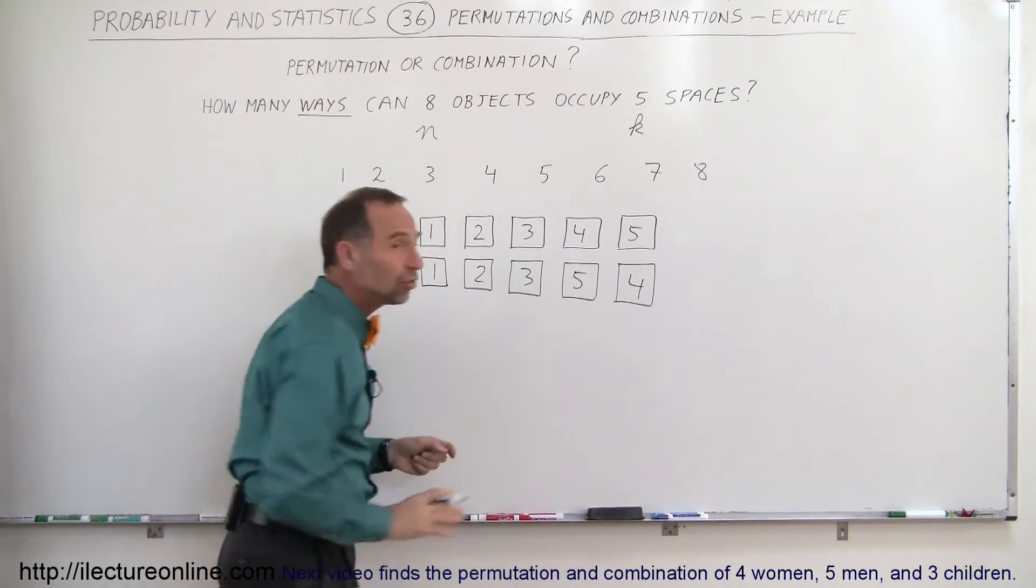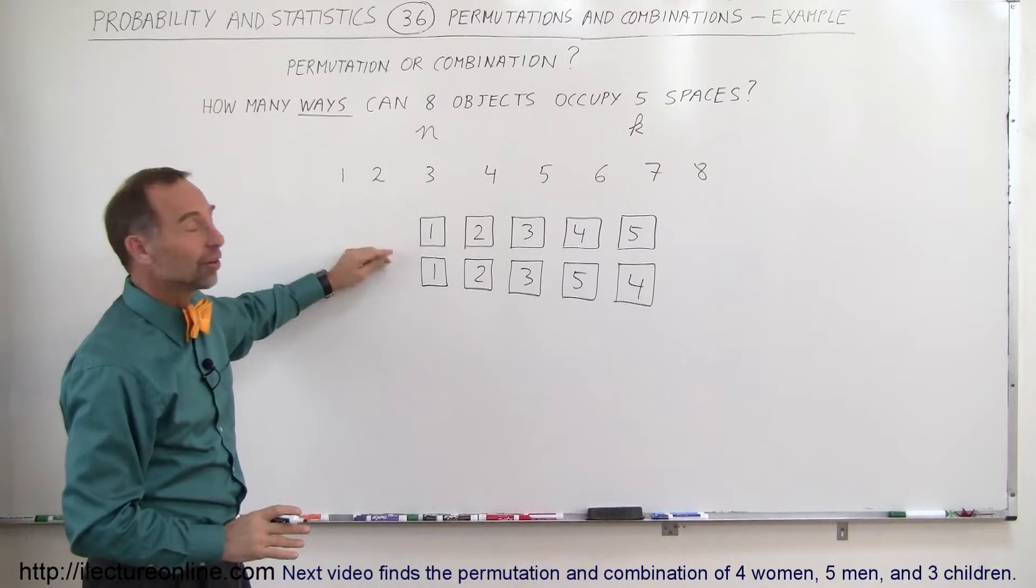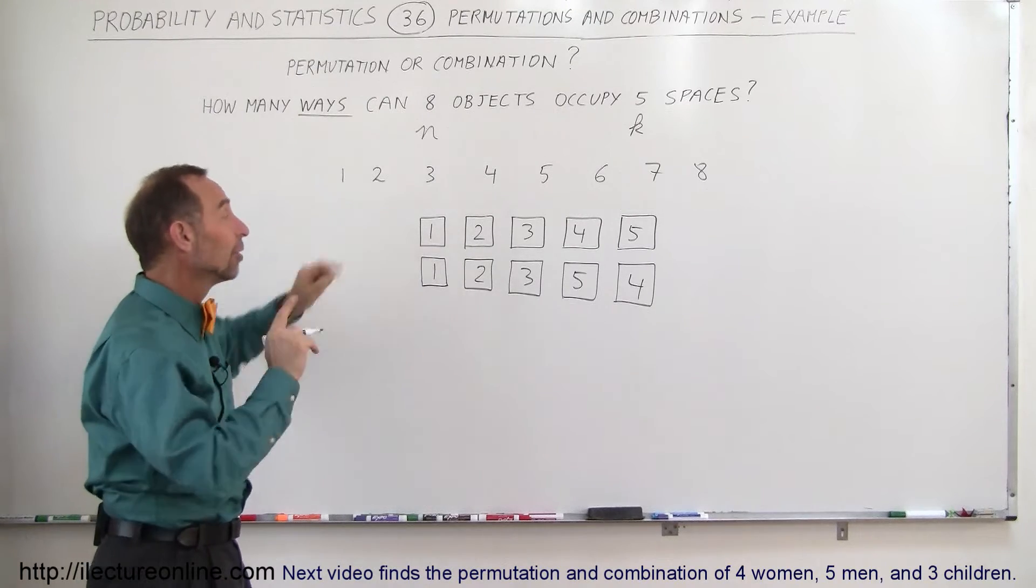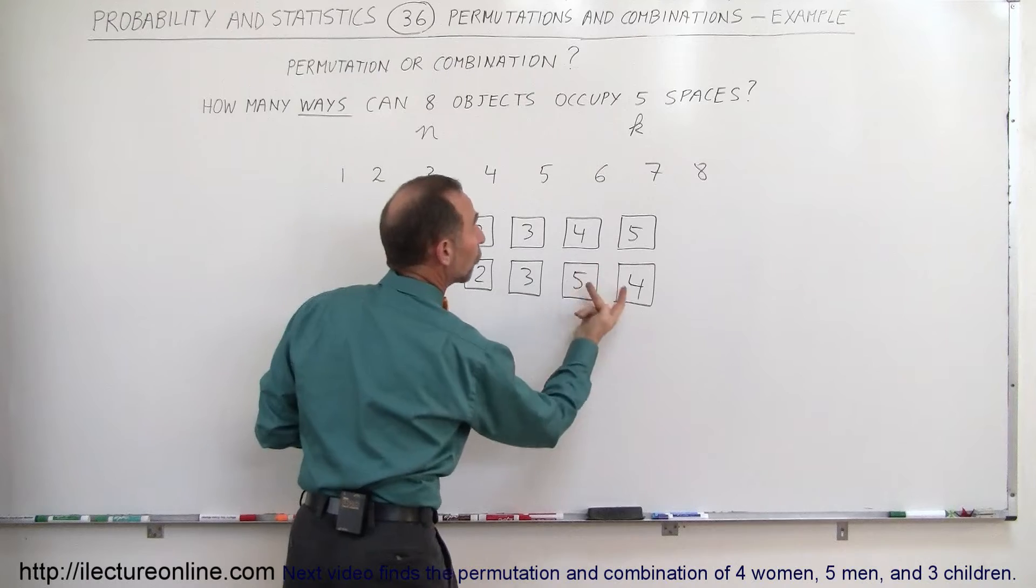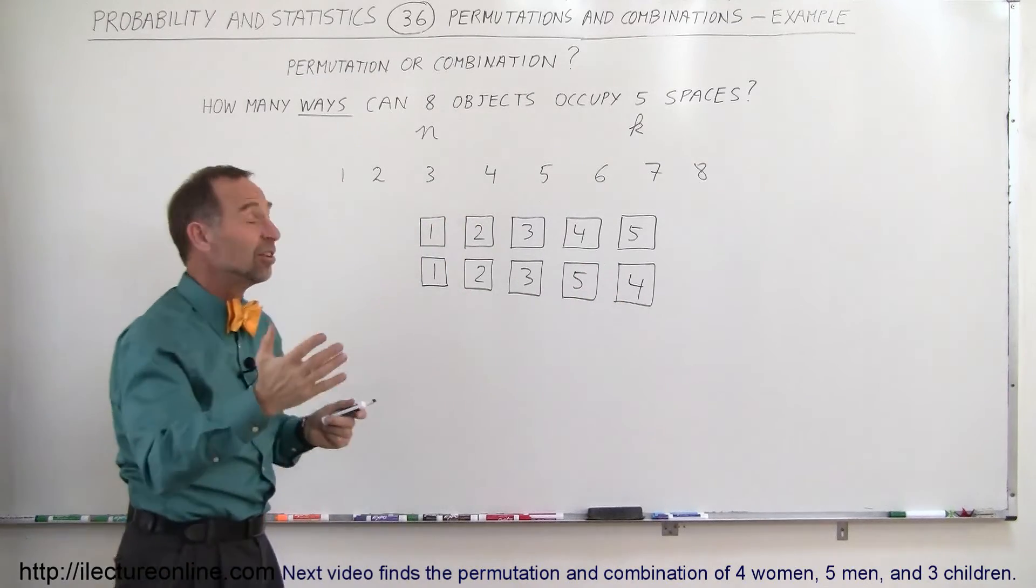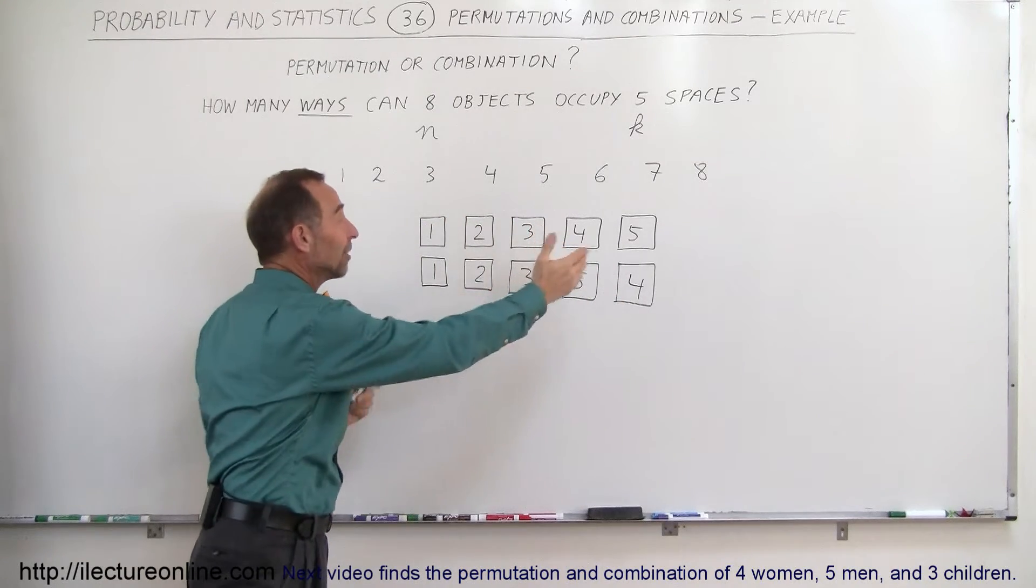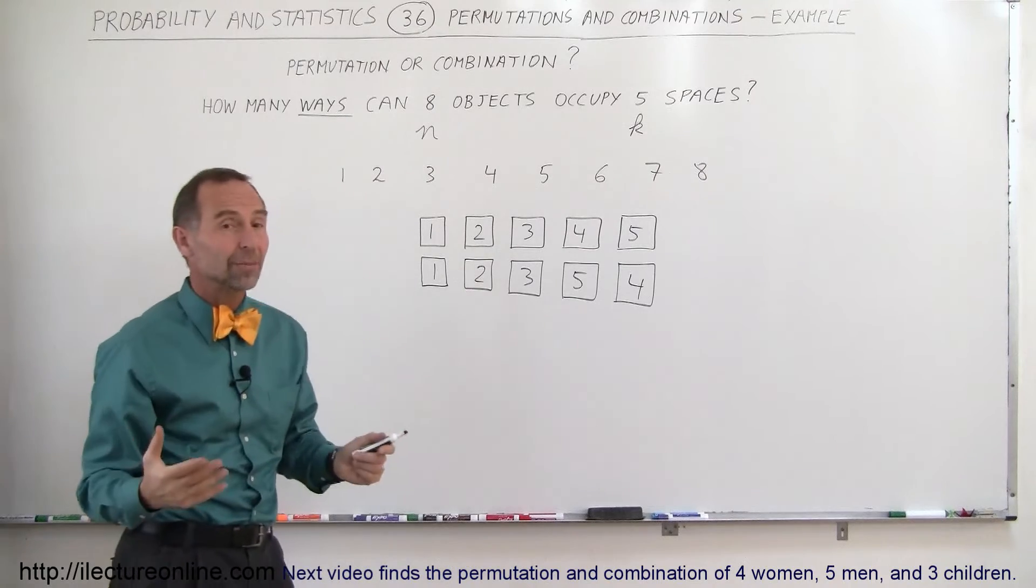When it comes to combinations, there's no difference here. This is one and the same. But when it comes to permutations, there is a difference because we interchange the 4 and the 5. For combinations, we say, well we have numbers 1 through 5 and it doesn't matter how you arrange them, it's all the same thing.